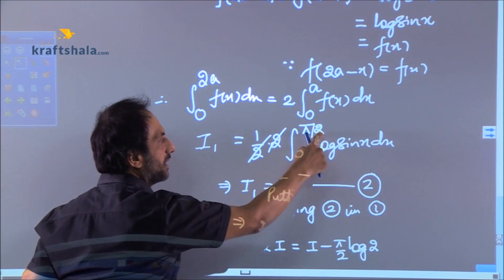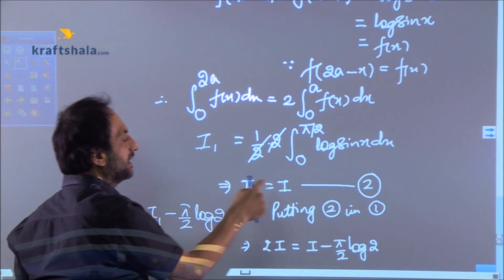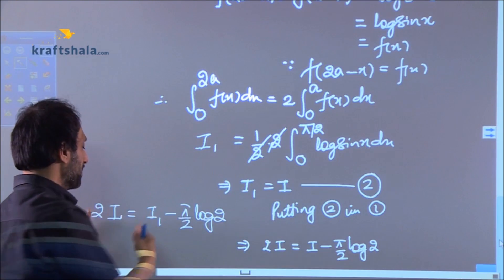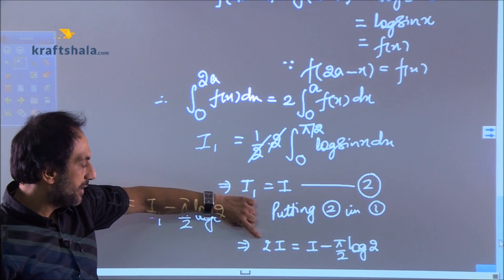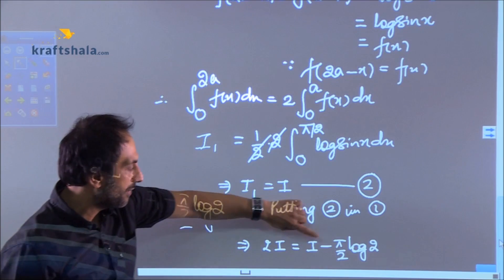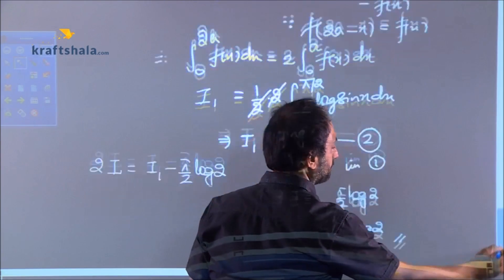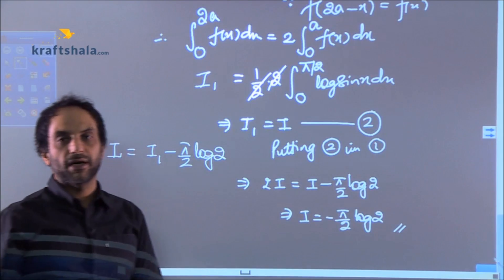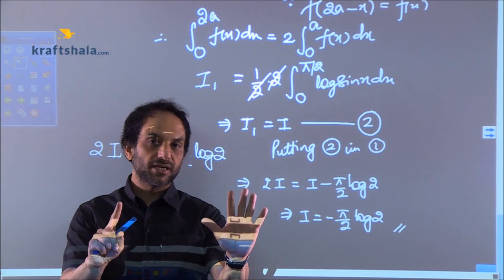And this is 1/2 × 2 × 0 to π/2 log sin x dx and I₁ became I and we substituted I in place of I₁ and the equation became 2I = I - π/2 log 2 and your answer is -π/2 log 2. In many school papers this question comes for six marks.